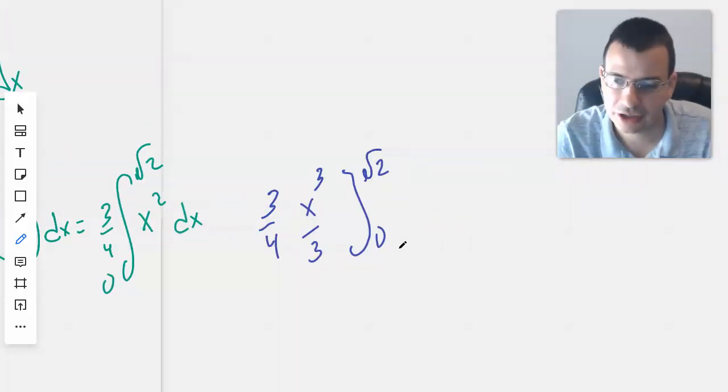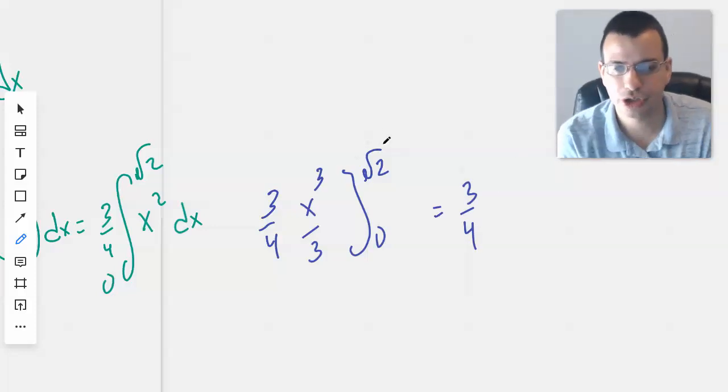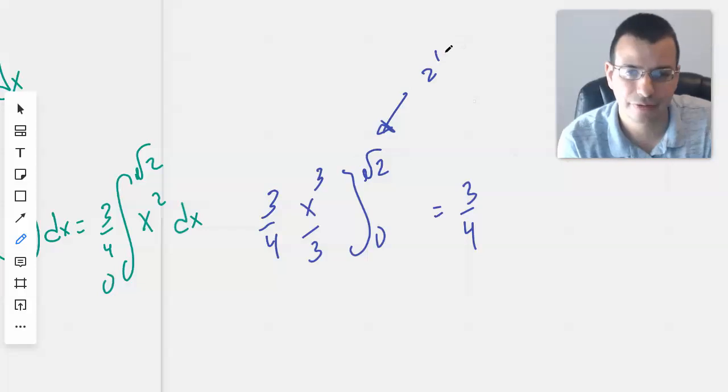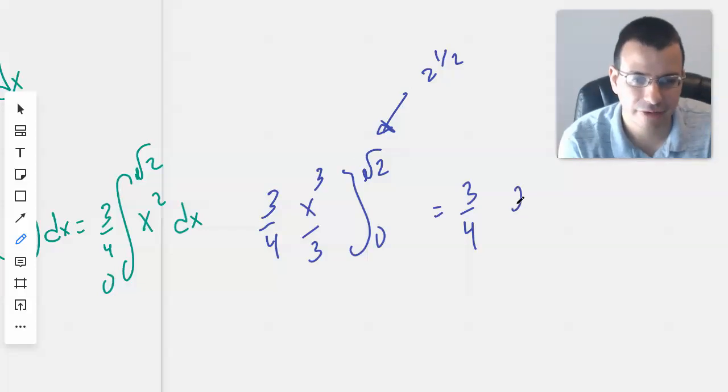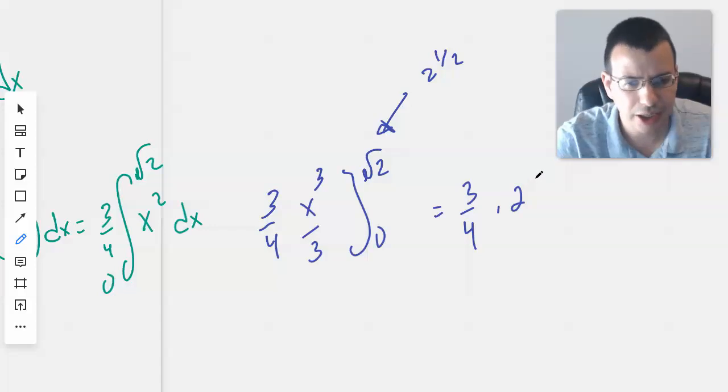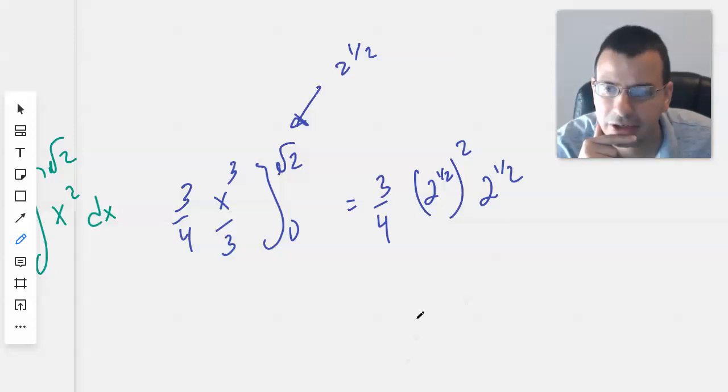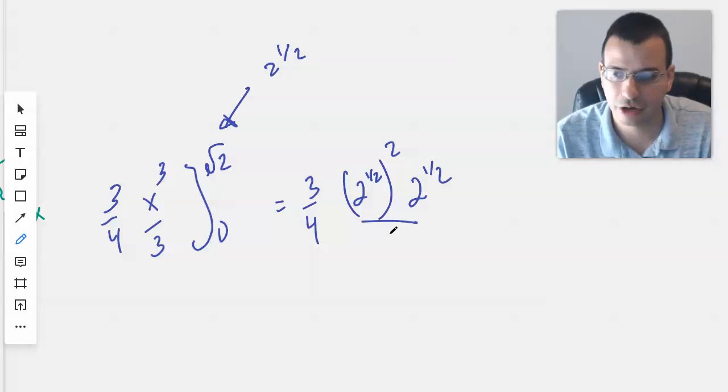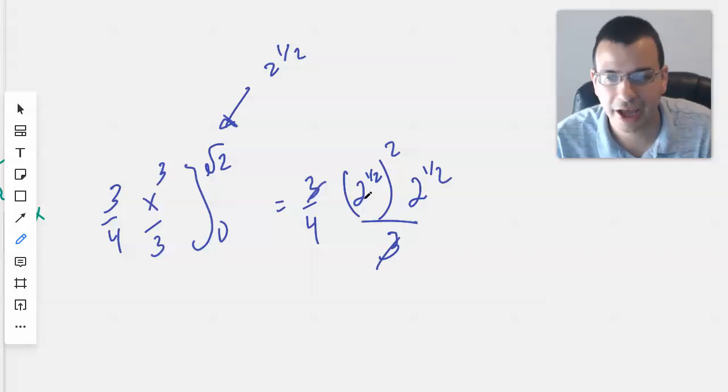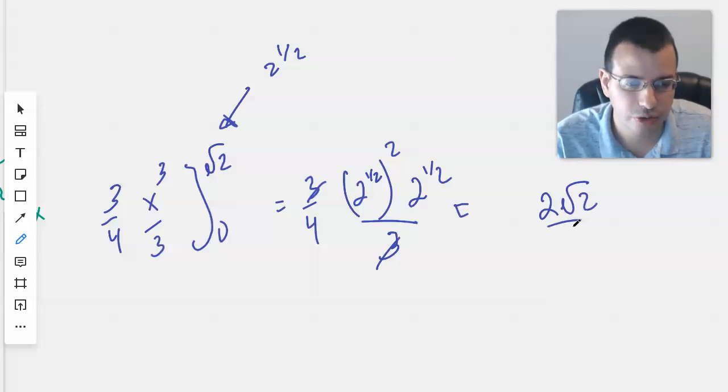And that gives us equals three fourths times, now we need to do square root of two, which is just two to the one half. So we'll do two to the one half. It's always the algebra that seems to be the hardest part. So we have, forgot the three, good call. Let's cancel. So we have, this equals square root of two squared will be two times the square root of two over four, which will then be square root of two over two.